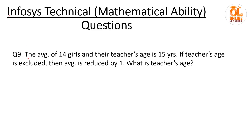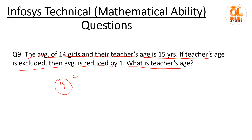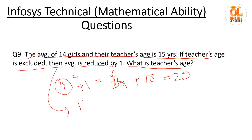Next question — average age: the average of 14 girls and their teacher is 15 years. If the teacher's age is excluded, the average reduces by 1. When the teacher is excluded the average drops by 1, so the total reduction across 14 girls is 14. Therefore without the teacher, the average age is 14.